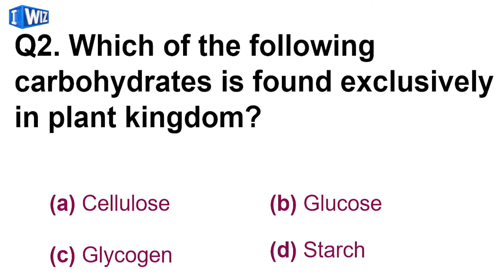Next is, which of the following carbohydrate is formed exclusively in plant kingdom? So plant kingdom mein present hoote hai, cell wall mein present hoota hai, cellulose. So A is the correct option. That is, cellulose is present exclusively in the plant kingdom.